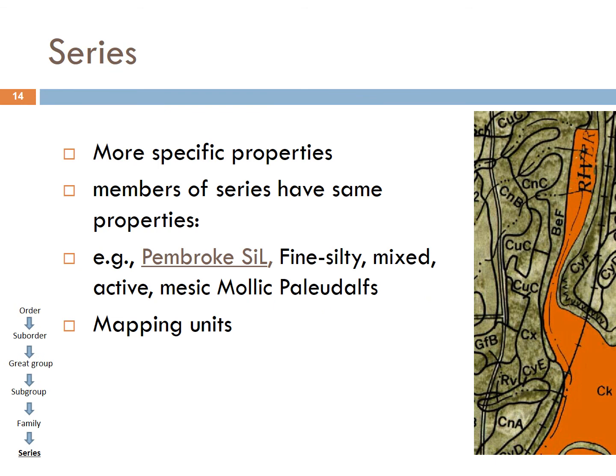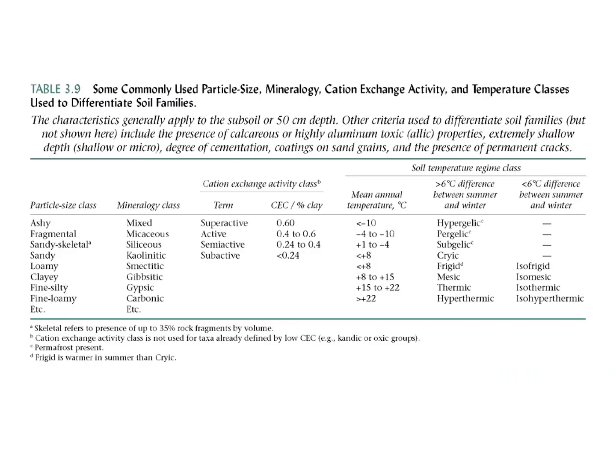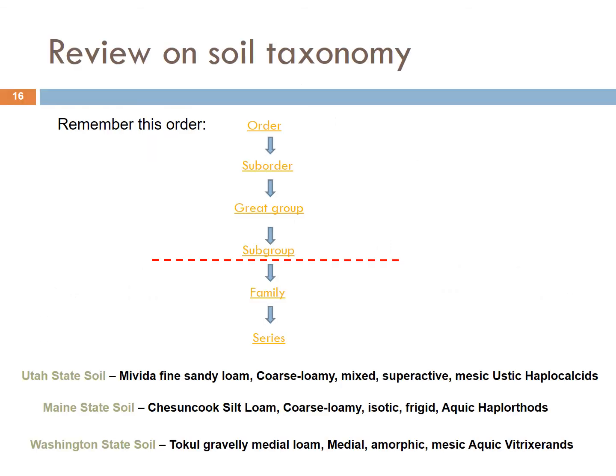For example, the Miami soil series is usually found in Indiana. You can do a fun thing: put your name followed by 'soil description' into Google and see if something comes up. In review, we have order, suborder, great group, subgroup, family, and series. As an example, one soil has order Inceptisols, suborder Calcids, great group Haplo-, subgroup Ustic, family fine sandy loam coarse loamy mixed super active mesic, and series Mavita.